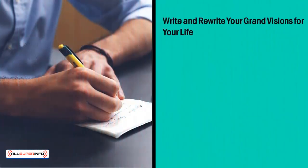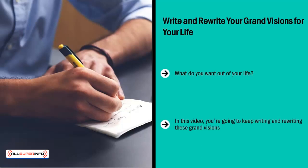Write and rewrite your grand visions for your life. What do you want out of your life? By this point you should already have a set of big goals that you have clarified. Keep writing and rewriting these grand visions. Be as clear as you can. What's important is that they are vivid in your mind. They have to stand out and trigger an emotional state.